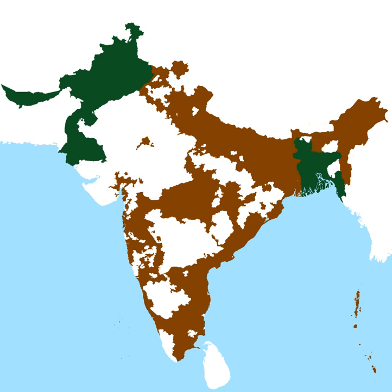Further provisions included: termination of British suzerainty over the princely states with effect from 15 August 1947, and recognition of the right of states to remain independent or accede to either dominion; abolition of the use of the title 'Emperor of India' by the British monarch, subsequently executed by King George VI by Royal Proclamation on 22 June 1948. The Act also made provision for the division of joint property between the two new countries, including in particular the division of the armed forces.